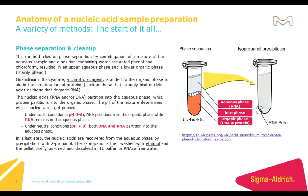One of the oldest techniques still used by scientists today for nucleic acid purification is phase separation and cleanup, commonly called a phenol-chloroform isolation. The nucleic acids separate due to preferences for the hydrophilic environment of the aqueous phase compared to that of the organic solvent. Guanidium thiocyanate, a chaotropic agent, is added to the organic phase to aid in the denaturation of proteins. DNA partitions into the organic phase while RNA remains in the aqueous phase under acidic conditions, such as between pH 4 and 6.